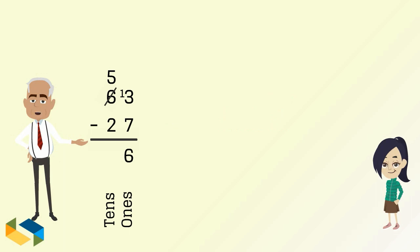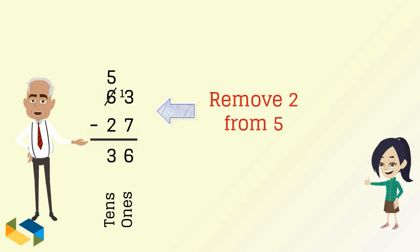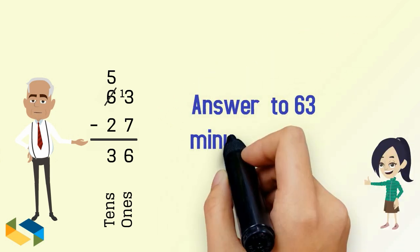At the tens place, we have to remove 2 from 5, or rather 20 from 50, to get 30 as the answer. So as a result, the answer to 63 minus 27 is 36.